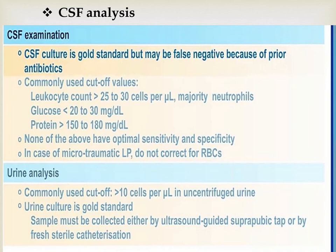Urine analysis and urine culture should be sent for late onset sepsis, as urinary tract infection is not a focus of infection in early onset neonatal sepsis. For all late onset neonatal sepsis with unknown focus, urine culture and urinalysis should always be sent. The urine sample must be collected either by ultrasound-guided suprapubic tap or by fresh sterile catheterization.